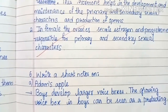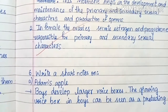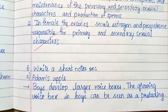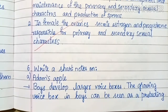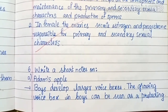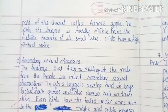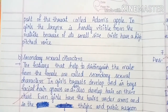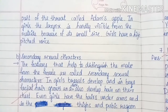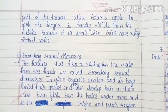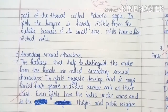Write a short note on Adam's apple. Boys develop larger voice boxes. The growing voice box in boys can be seen as a protruding part of the throat called Adam's apple. In girls, the larynx is hardly visible from the outside because of its small size. Girls have a high-pitched voice.